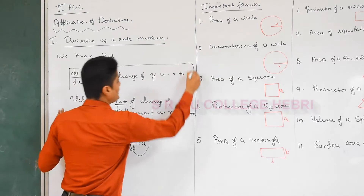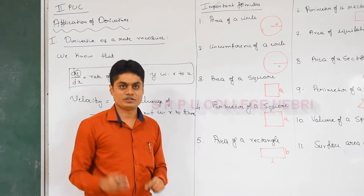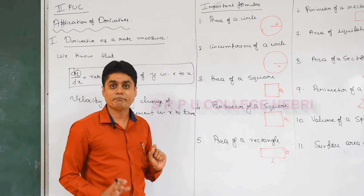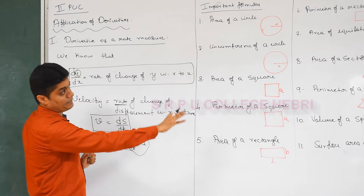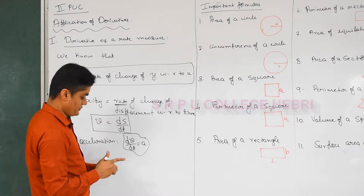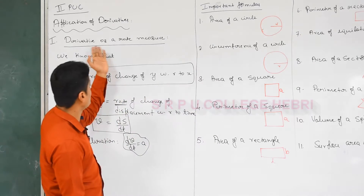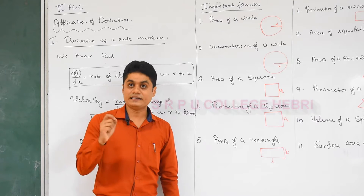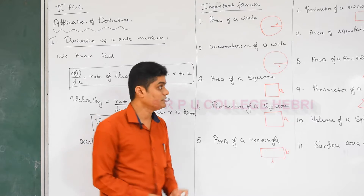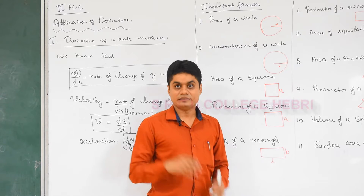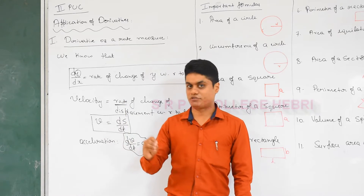We use the same concept — rate of change of a quantity with respect to a variable — to solve problems in this chapter under the heading 'Derivative as a Rate Measure'. In this section we are going to solve problems based on mathematics concepts, not physics. Under this heading, confirm one five-mark question you will get in the exam. One question in the final exam will be from 'Derivative as a Rate Measure', so this section is very very important for five marks and easy to answer compared to other questions.